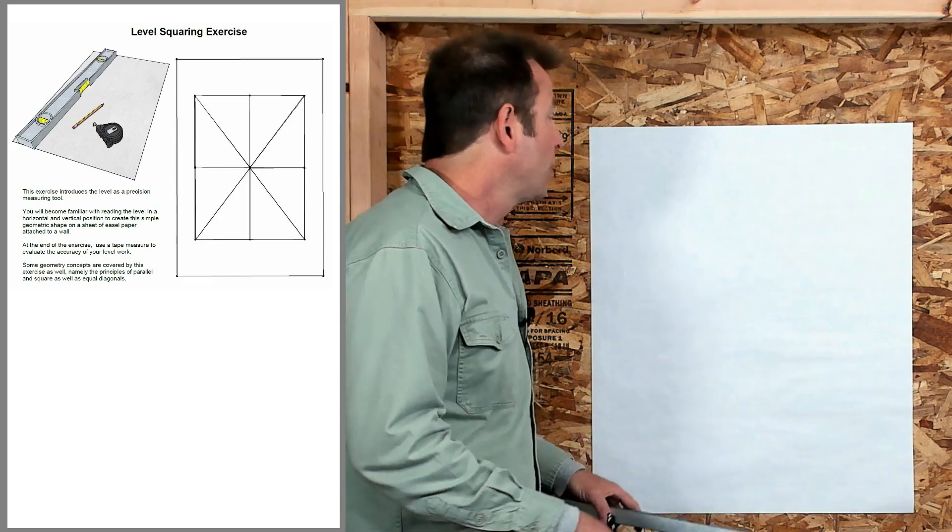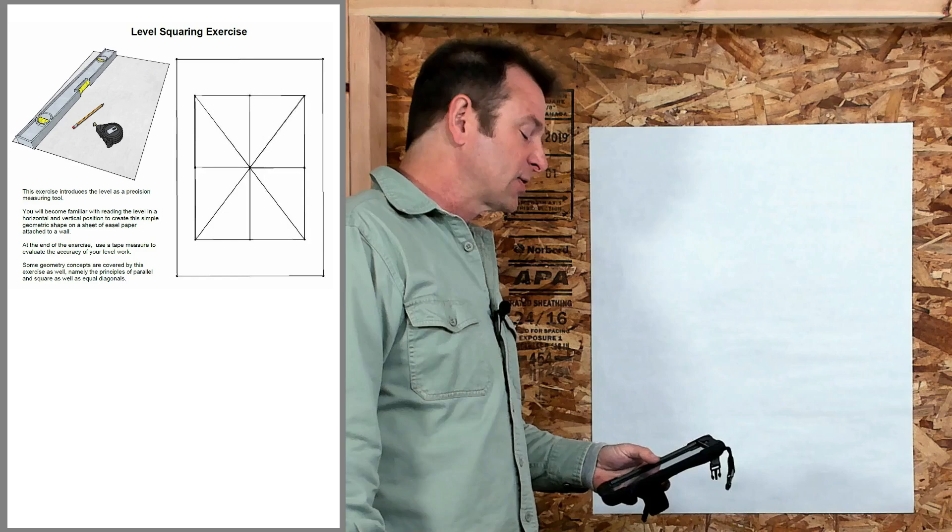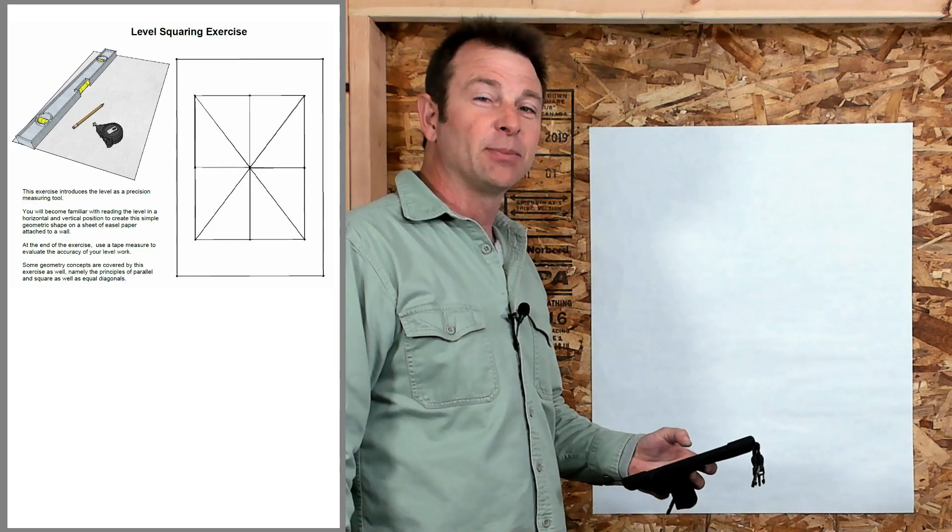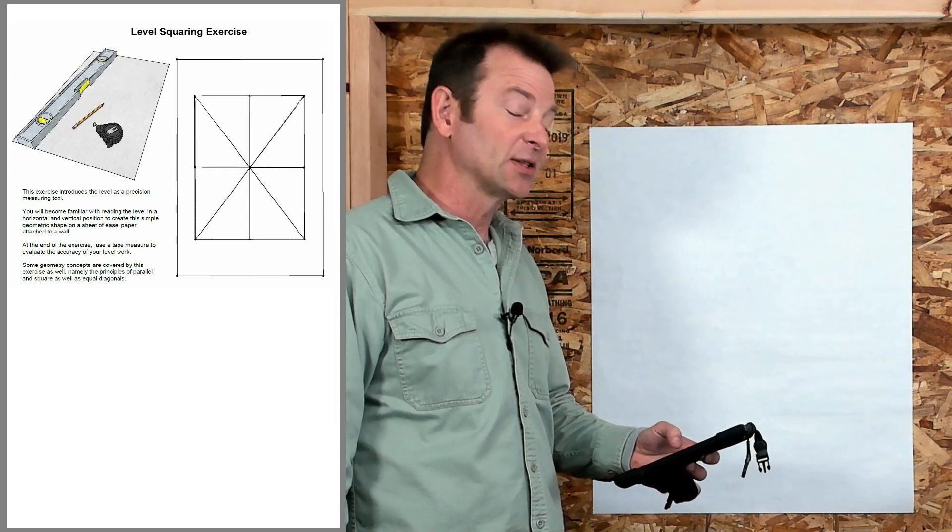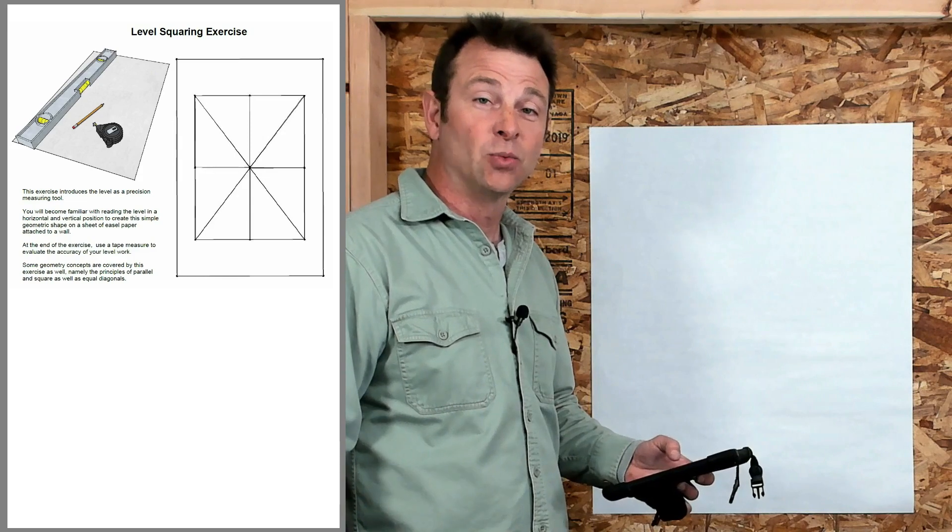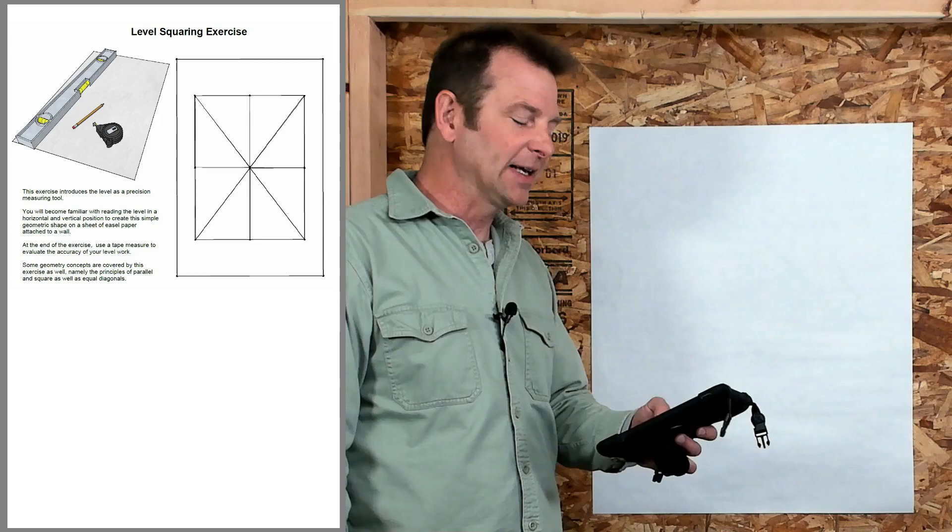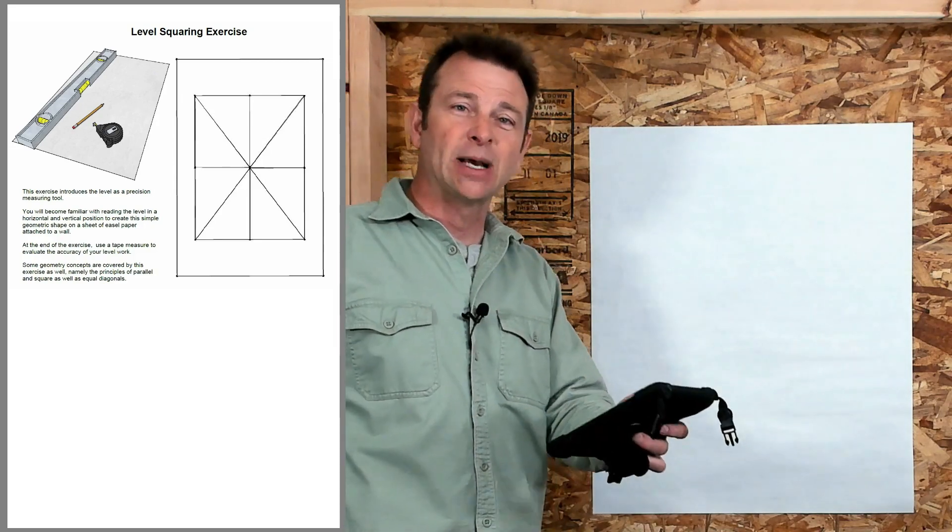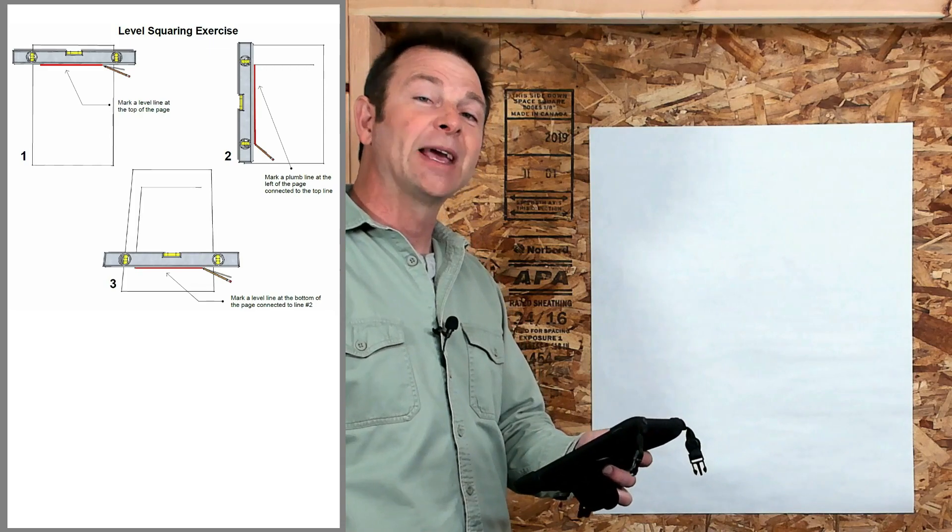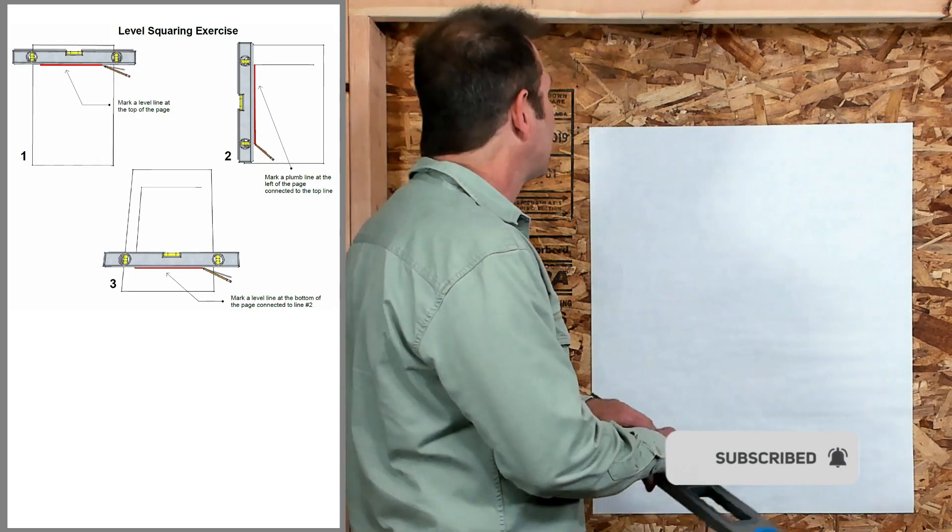We're going to pull out our plans and you'll see what you're trying to produce. Page one shows you the tools and materials we're using and a simple diagram of what you're trying to create. It's going to be a rectangle of your size with diagonals and a vertical and horizontal line in the center. There's a step-by-step process if you go to page two. The first line we're going to make is the top line, using our level.